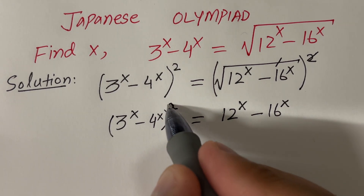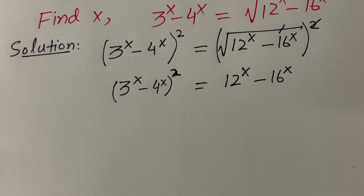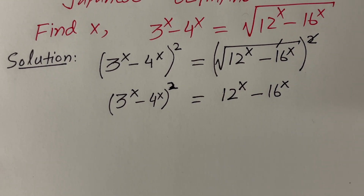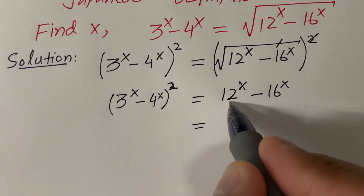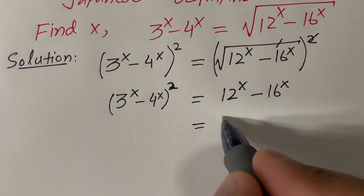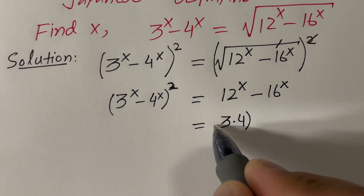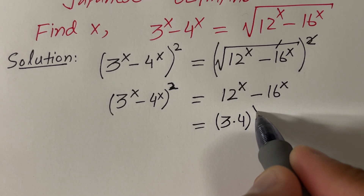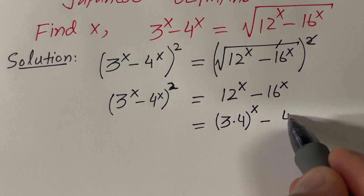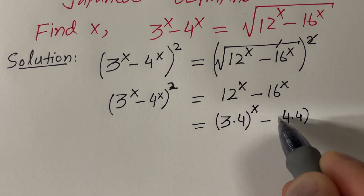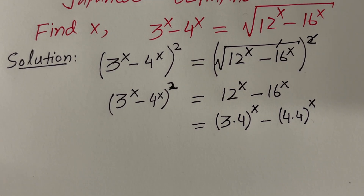I am not simplifying the left hand side yet. Now, on the right hand side, we have 12. 12 is 3 times 4 raised to the power x, and 16 is 4 times 4 raised to the power x.